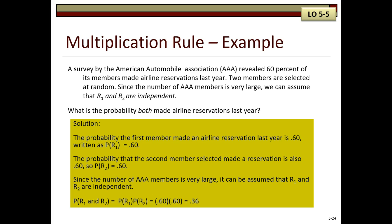The probability the first member made an airline reservation last year is 60%, and the probability that the second member selected made a reservation is also 60%, or .60. So since the number of AAA members is very large, it can be assumed that R1 and R2 are independent. Therefore, we multiply the .60 times .60, and there is a .36, or a 36% probability, that both made airline reservations last year.